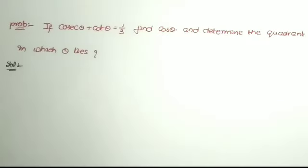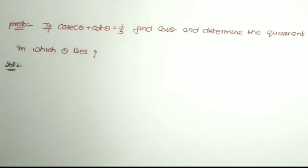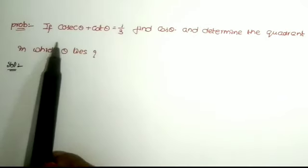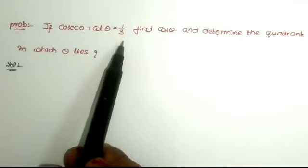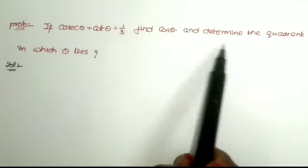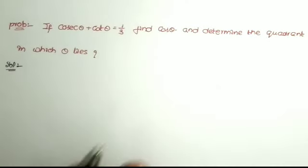Welcome back to Sharathah Maths channel. In this video, I am posting the most important two maths questions from the topic trigonometric ratios up to transformations from Maths 1A. This is exercise 6(a) and this is the second video of the trigonometry two-marks questions. If cosecant theta plus cot theta is equal to 1 by 3, then find cos theta and determine the quadrant in which theta lies.